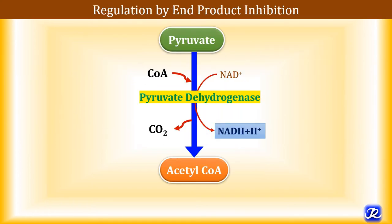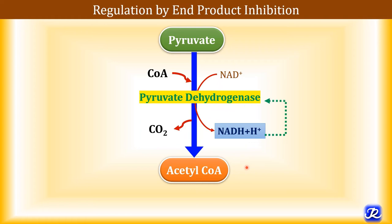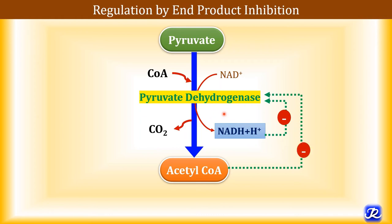Pyruvate dehydrogenase complex is regulated by two mechanisms. The first is end product inhibition — the products NADH and acetyl-CoA both inhibit the enzyme. Whenever there is increased production of NADH and acetyl-CoA, this inhibits the enzyme and slows down the conversion of pyruvate to acetyl-CoA.